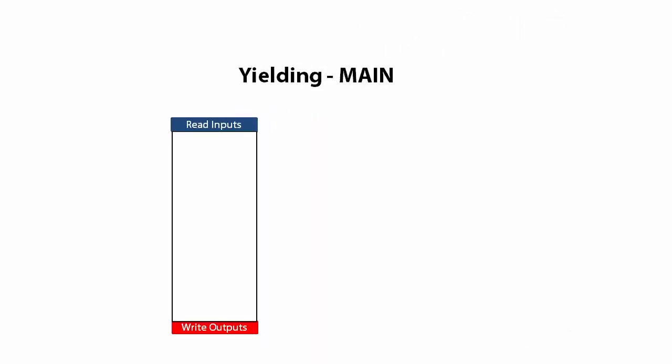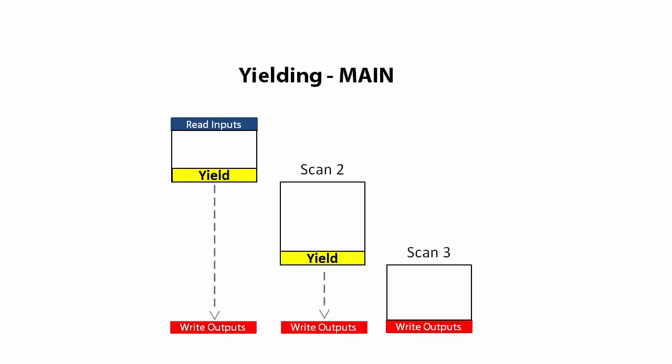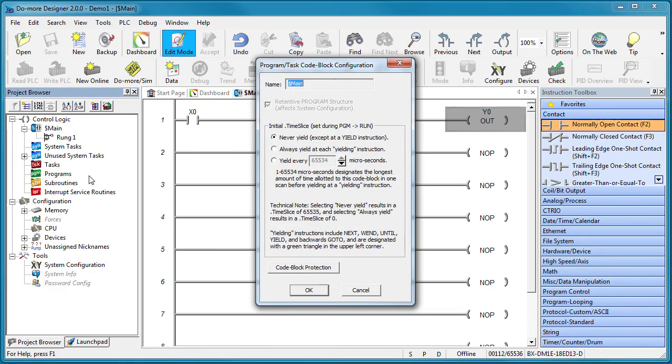Here is something to think about. Can the main program yield? That is, could you break up the main program so that different parts run on different scans? Sure, the main program is just another program so all these options still apply.